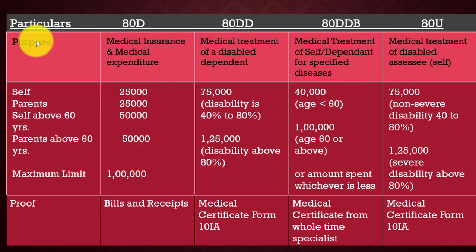Section 80U is only for self — not for parents, dependent children, brother, or sister. If your disability is 40% to 80%, the deduction is ₹75,000. If your disability is 80% and above, it is up to ₹1,25,000. The same limits apply as in Section 80DD — the key difference is that Section 80DD is only for dependents, while Section 80U is only for self. As proof, you must submit a medical certificate in Form 10-IA from a medical practitioner at a government or private hospital.